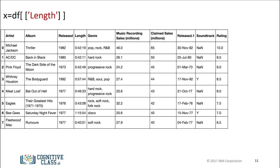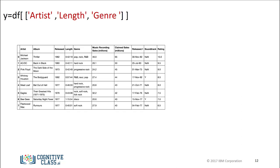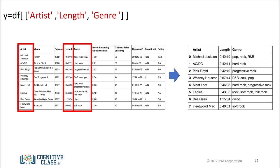We can create a new data frame consisting of one column. We just put the data frame name, in this case df, and the name of the column header enclosed in double brackets. The result is a new data frame comprised of the original column. You can do the same thing for multiple columns — put the data frame name df and the names of multiple column headers enclosed in double brackets. The result is a new data frame comprised of the specified columns.